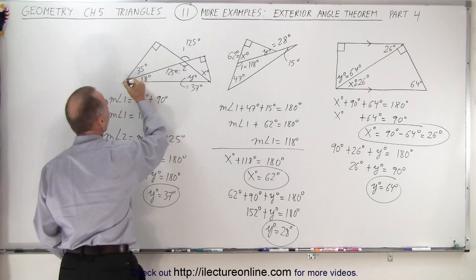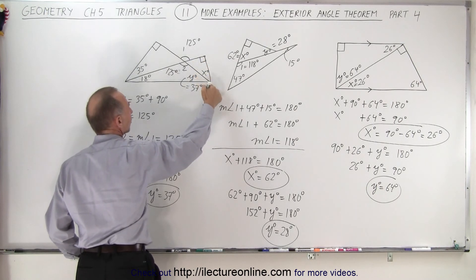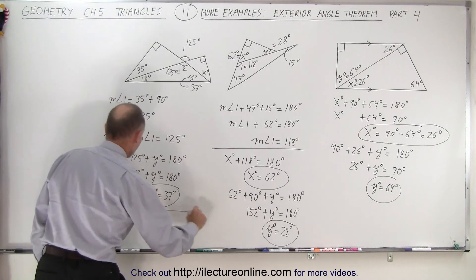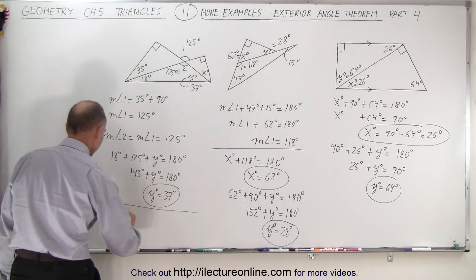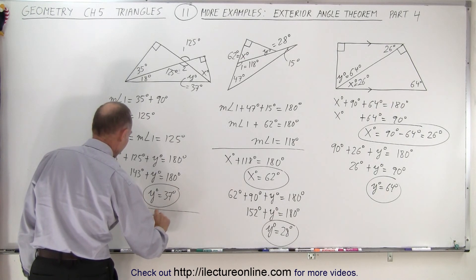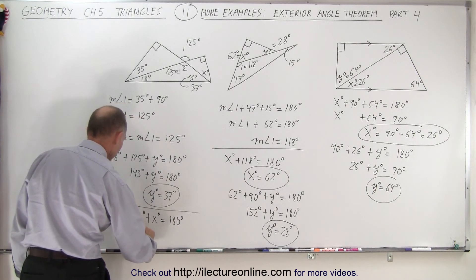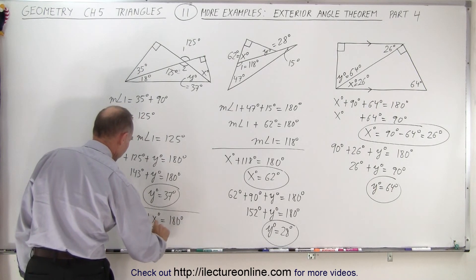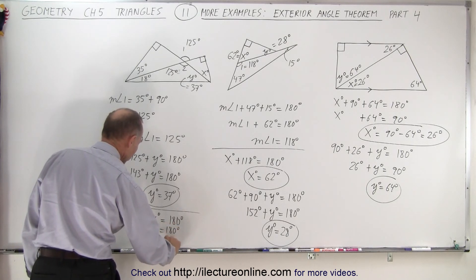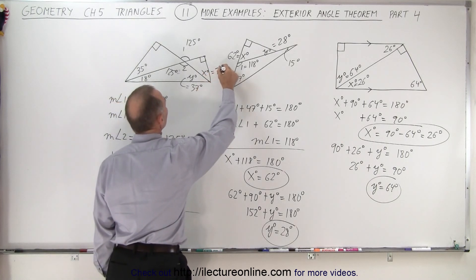I can see the triangle right here. I know this angle, I know that this is 90 degrees, and there is x for this particular triangle. Those three must add up to 180 degrees. So 18 degrees plus 90 degrees plus x degrees equals 180 degrees, which means x degrees equals 72 degrees.